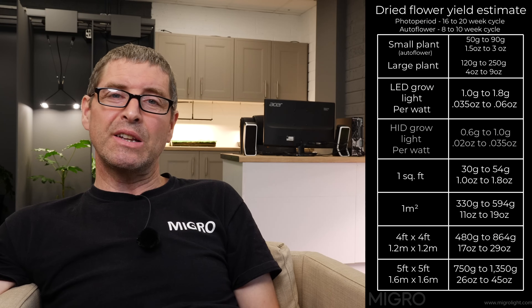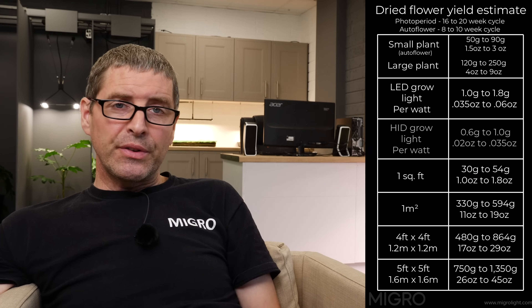Whereas photo period plants, depending on the genetics, you can have them in the veg cycle and grow them very, very big before switching them over to flower. I've seen people fill a whole four foot by four foot tent with just one plant. To grow plants larger you need fewer plants to fill the space, but you also need to veg them for a longer time. So sometimes people will be getting a massive yield out of a four by four from one plant, but it could be taking them five months to complete the cycle.